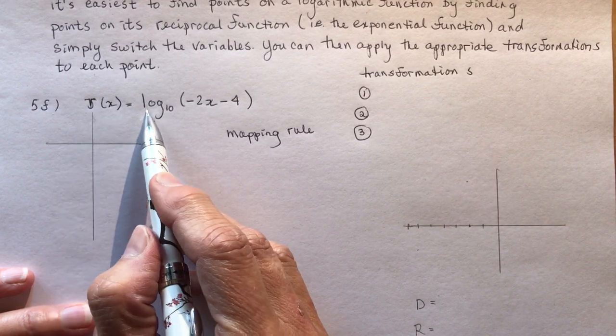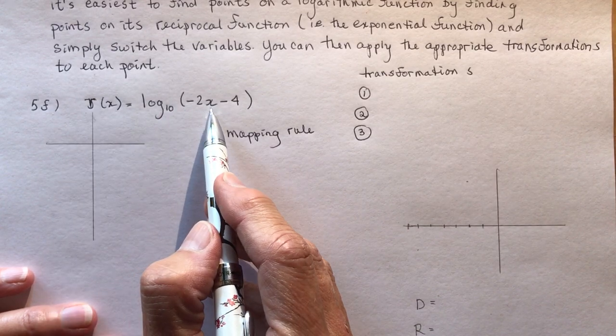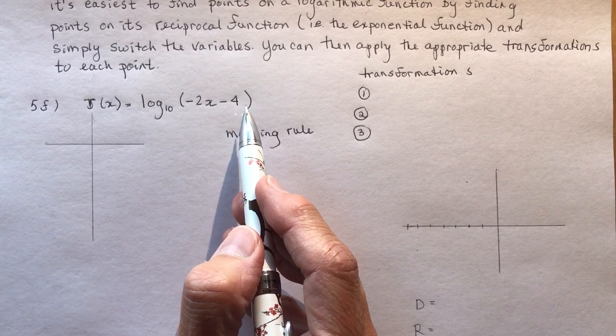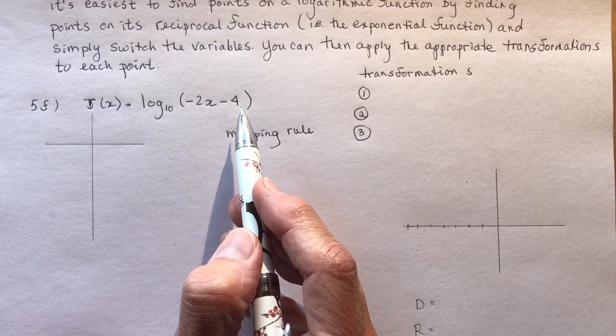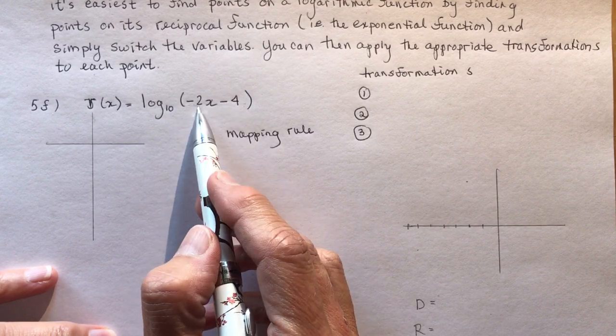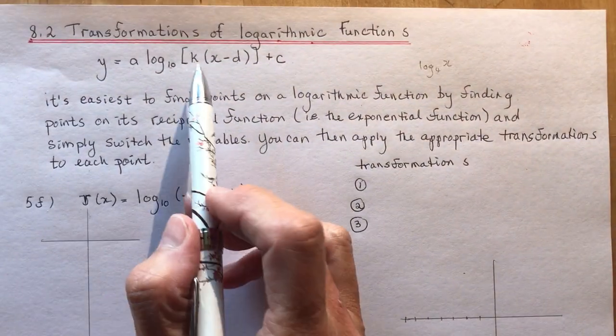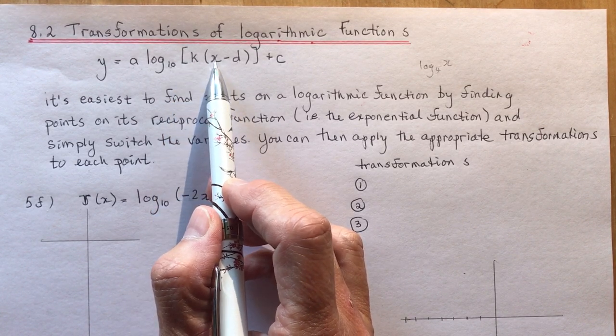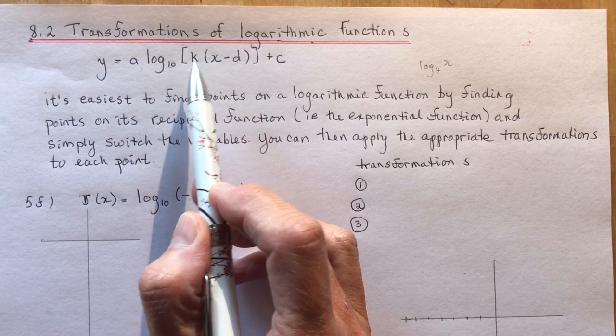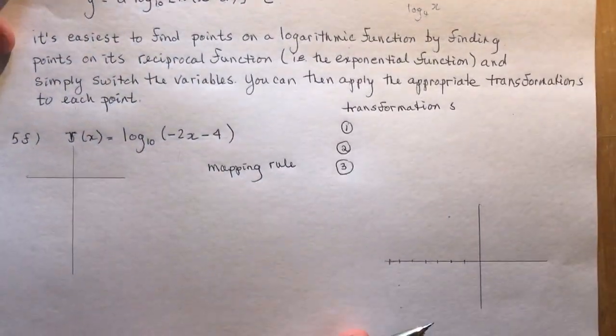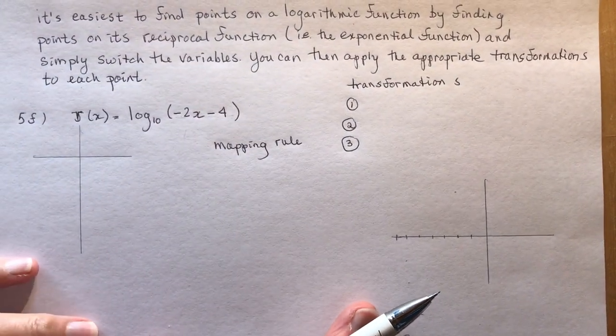So it says R at X equals log base 10 of minus 2 X minus 4. Now you probably got caught up on this in grade 11. This is not in the proper format. The proper format is that the K is separate from the X or the coefficient of X has to be a 1. So that means you need to factor first or you're going to have all the wrong direction and the wrong compression.